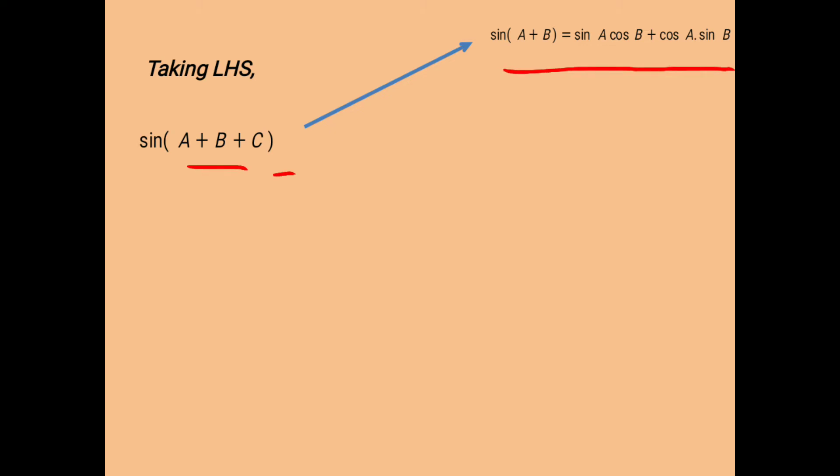Similarly, C is used as the second angle in place of B of the formula. Keeping this in mind, we can write sine(A+B+C) as sine(A+B)·cosC plus cos(A+B)·sinC.